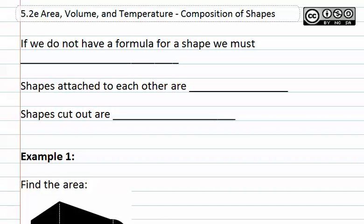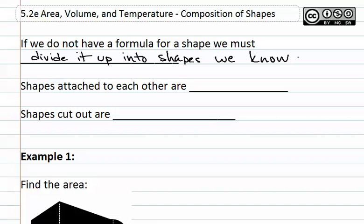Area, volume and temperature, composition of shapes. If we find that we do not have a formula for a particular shape we encounter, we can divide it up into shapes we do know. Shapes that are attached to each other and are all shaded are things that we are adding together. Shapes that are cut out of other shapes are things that are subtracted. We will see this in example one and two.